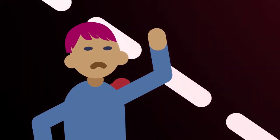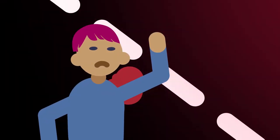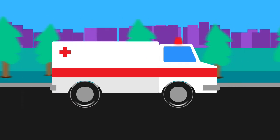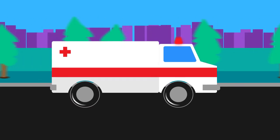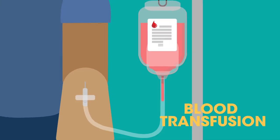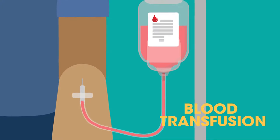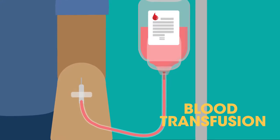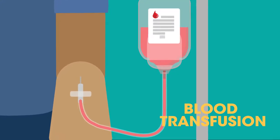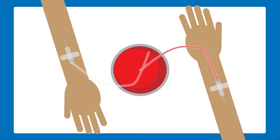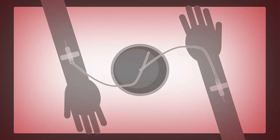Imagine you've been involved in an accident. You're bleeding and are rushed to hospital. You're given a blood transfusion to replace your lost blood. But you can't just have blood from any old donor. In fact, when doctors first attempted blood transfusions in the 17th century, they were unsuccessful and patients died.